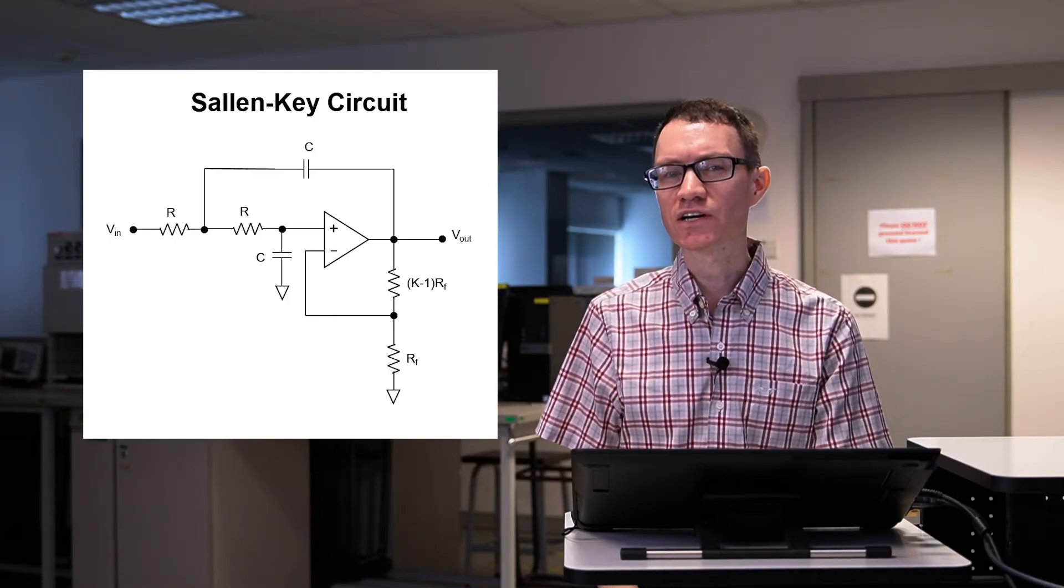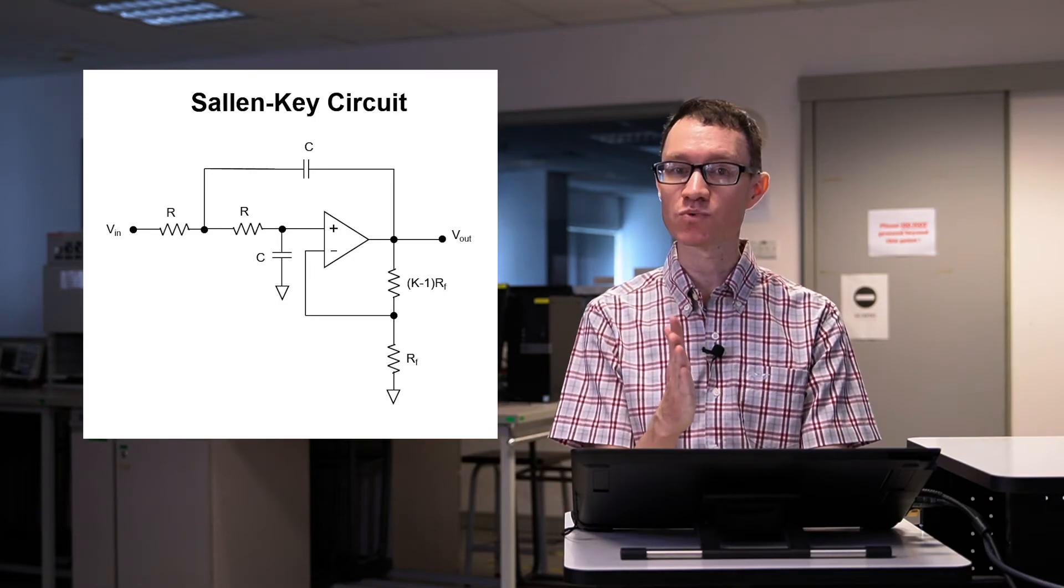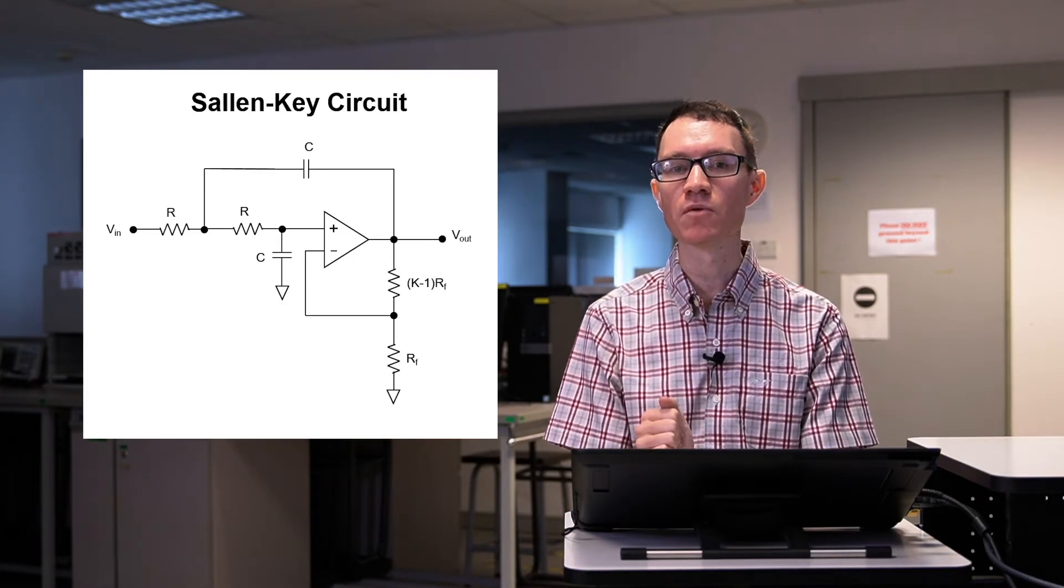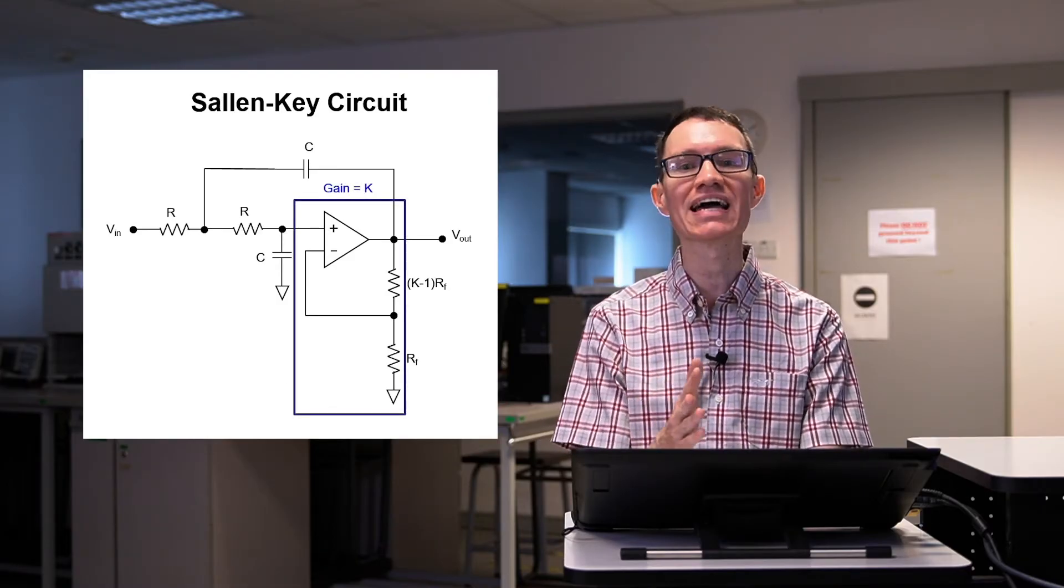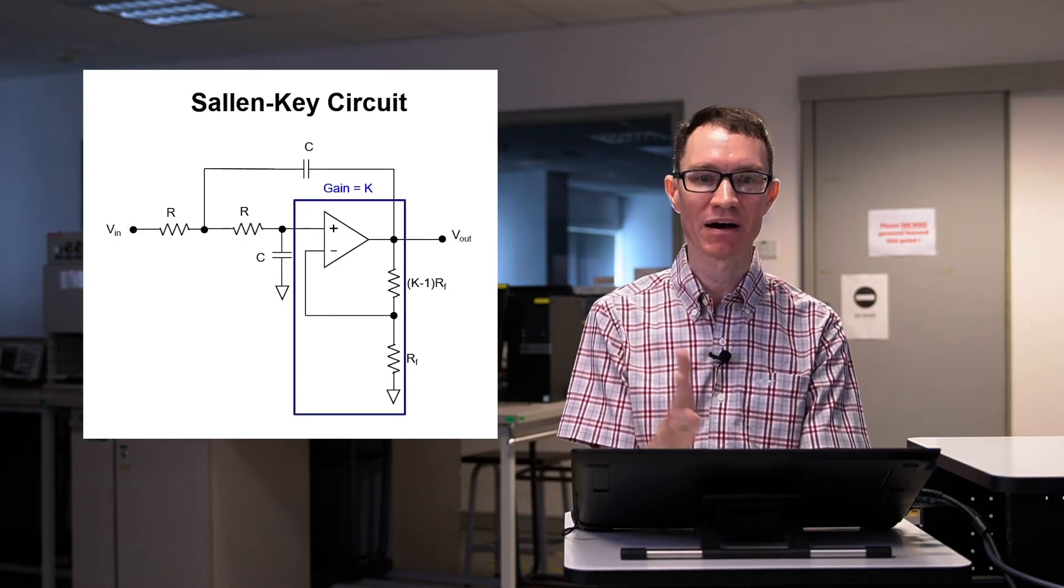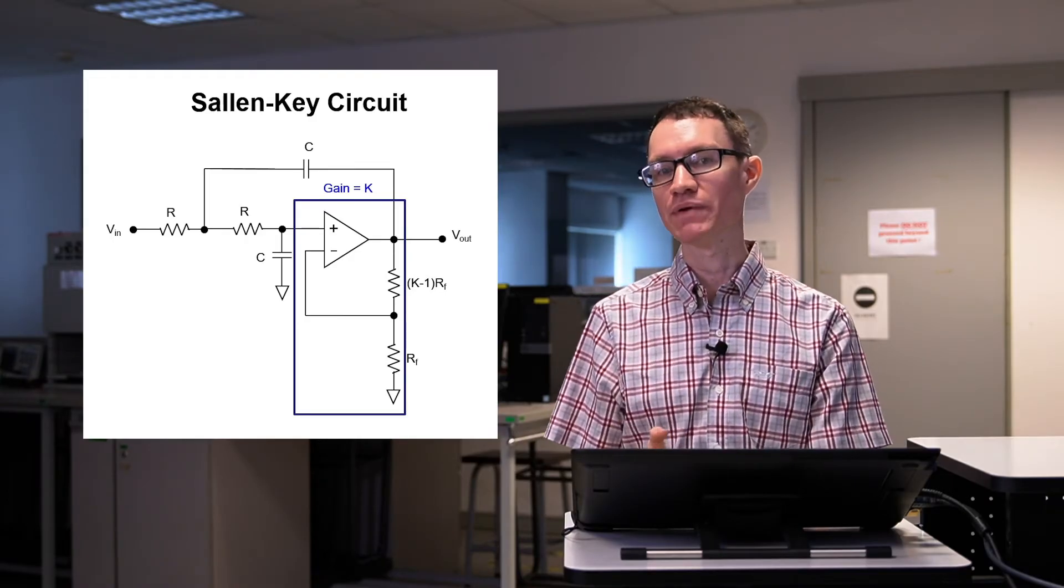Notice that in the circuit, the op-amp and the feedback resistors R sub F and the K minus 1 R sub F resistor form a non-inverting amplifier with a gain of K. In fact, that's why I labeled that second resistor K minus 1 times R sub F so that the gain K would be obvious.